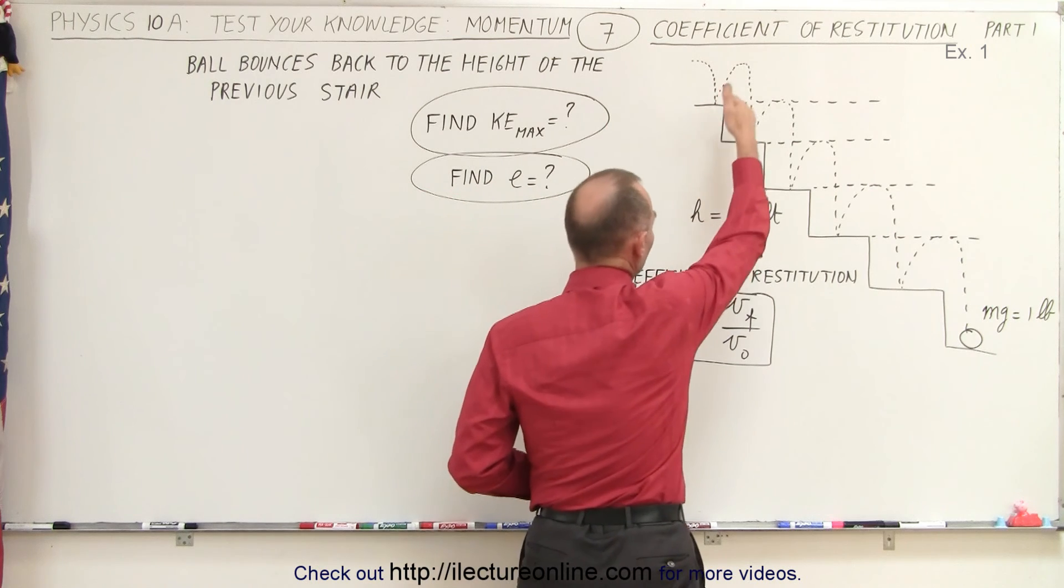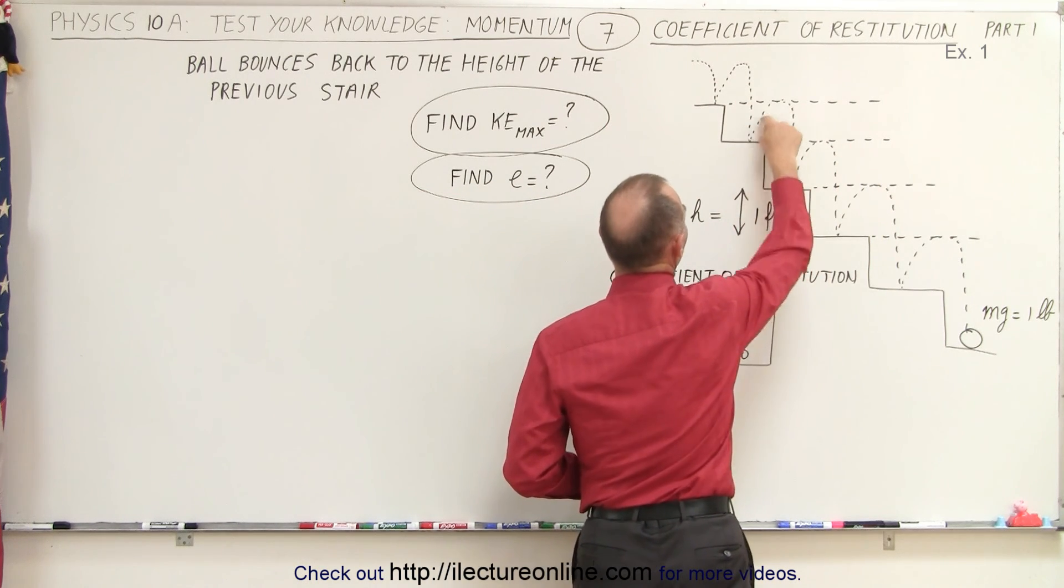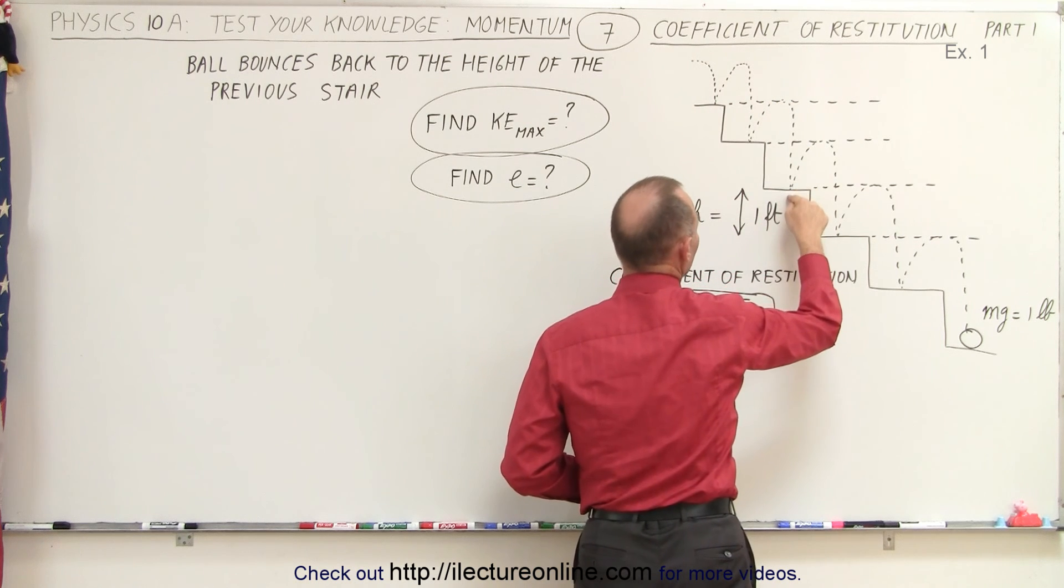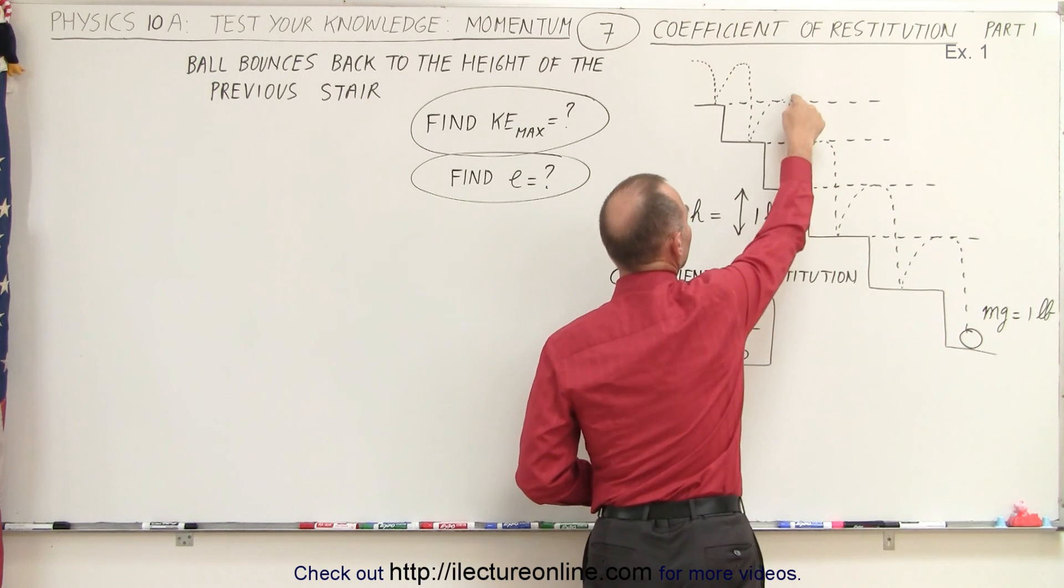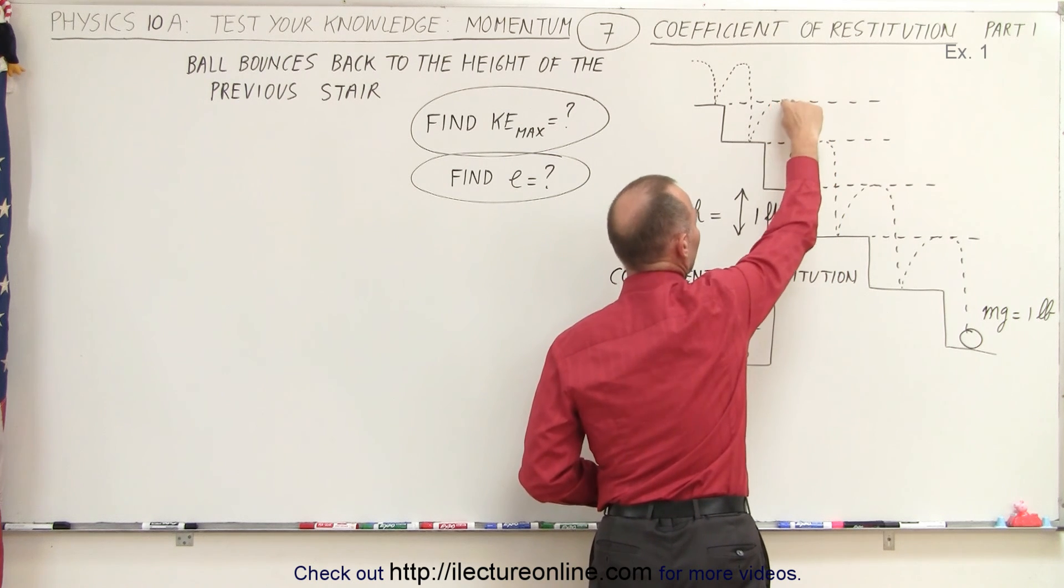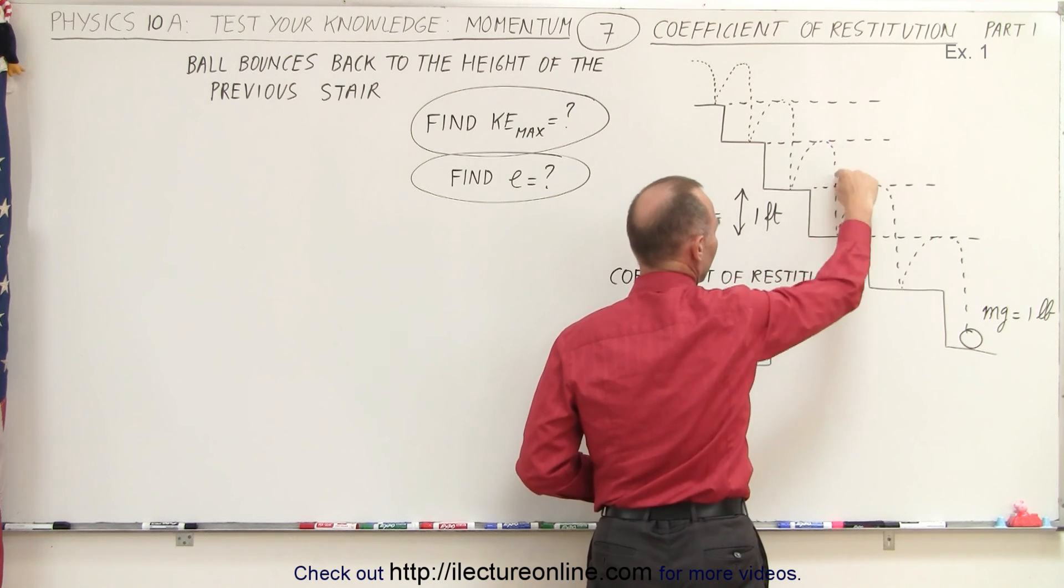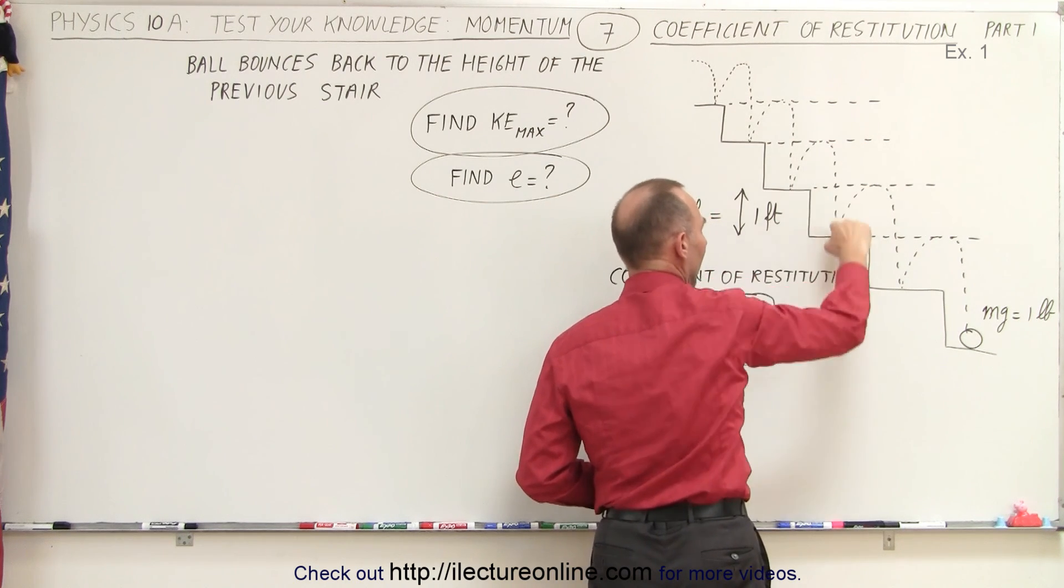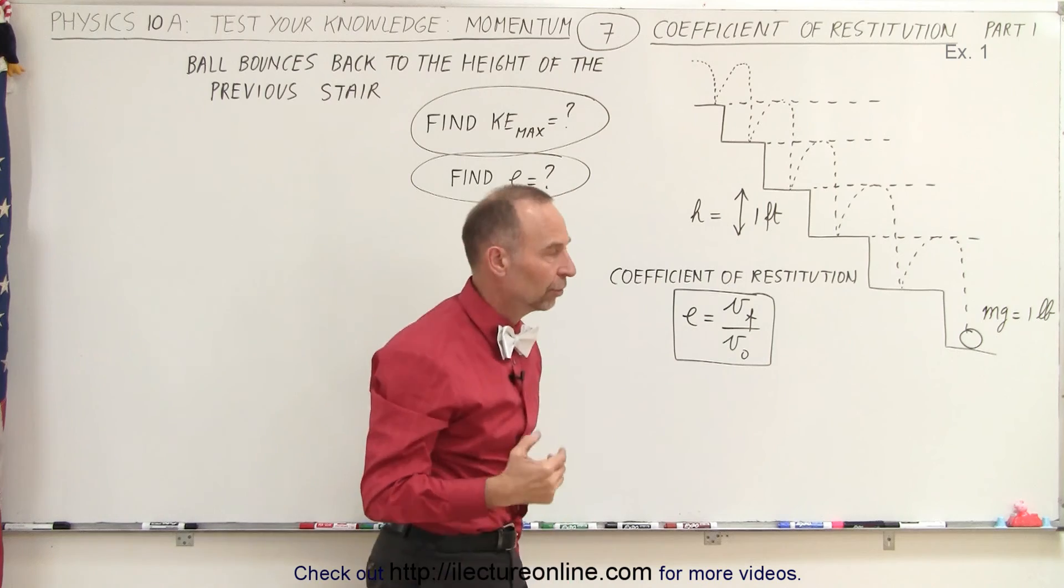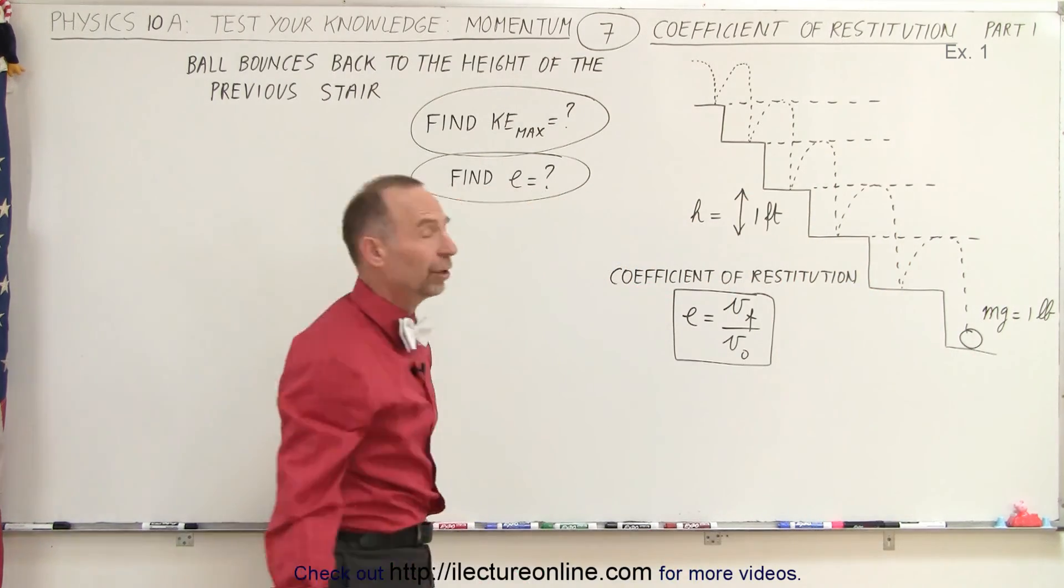We have a ball that bounces off the stairs. Notice that each time it hits a stair it bounces back up to the height of the previous stair before it hits the next step, which means the height that it comes from would be two, the height of two stairs together, so that would be the original height. It bounces back to the height of one stair, but again it comes down from a height of two stairs. The mass or the weight of the ball is equal to one pound. The height of each stair is equal to one foot.